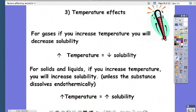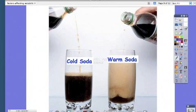Last is temperature effects. For gases, as you increase temperature, you decrease solubility—it's an inverse relationship. As one goes up, the other goes down. For solids and liquids, if you increase temperature, you increase solubility. So it's a direct relationship.